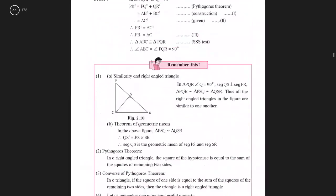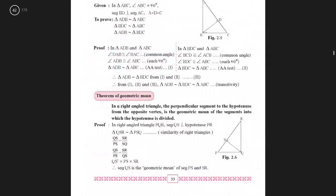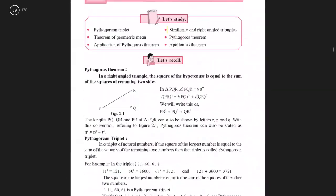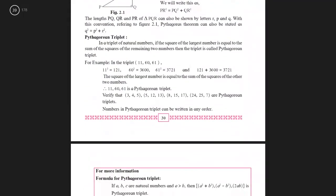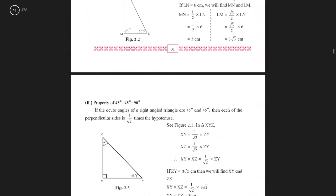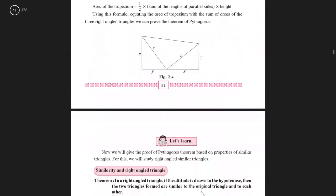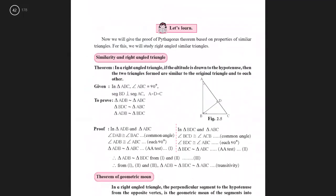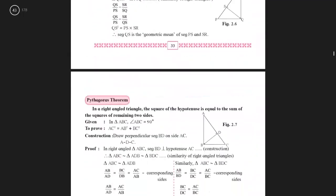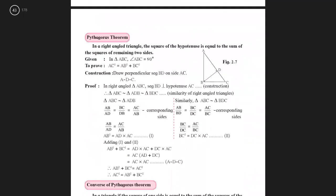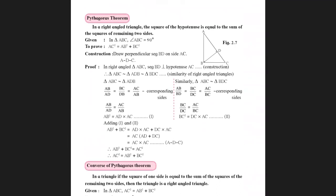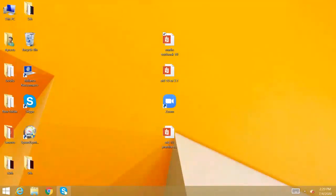A quick revision before we start the exercise: Pythagoras theorem, Pythagorean triplet, 30-60-90 and 45-45-90 degree triangles, similarity in right angle triangles, theorem of geometric mean, Pythagoras theorem with its proof, and the converse. In the next session we will start with exercise 2.1, so revise all these theorems and get ready for solving the exercise. Thank you, children.